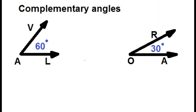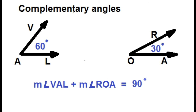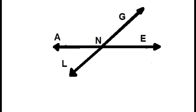For example, angle VAL and angle ROA are complementary angles because the measure of angle VAL plus the measure of angle ROA is equal to 90 degrees. Two intersecting lines form angles and they also have names.